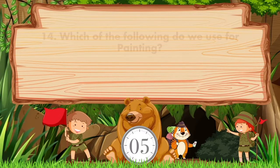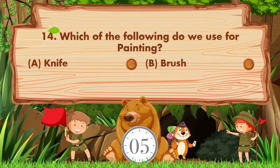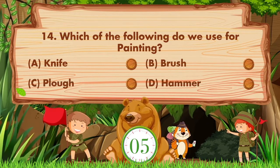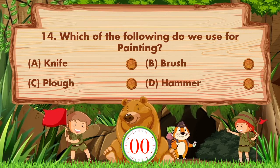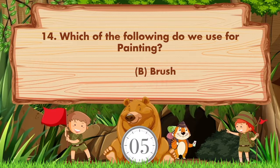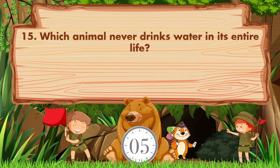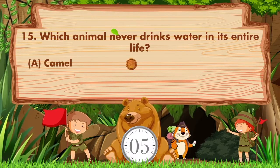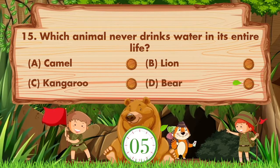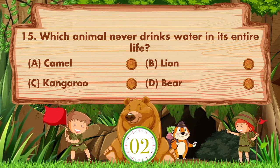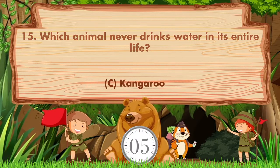Which of the following do we use for painting? Option A: knife, B: brush, C: plow, D: hammer. Answer is option B, brush. Which animal never drinks water in its entire life? Option A: camel, B: lion, C: kangaroo, D: bear. Answer is option C, kangaroo.